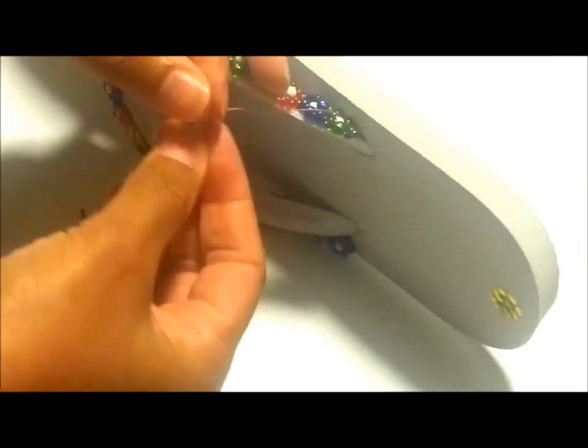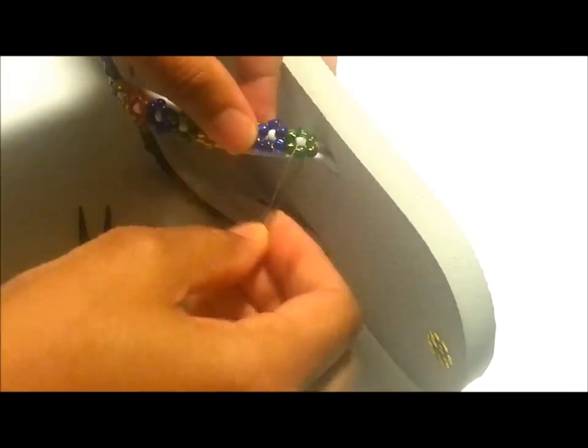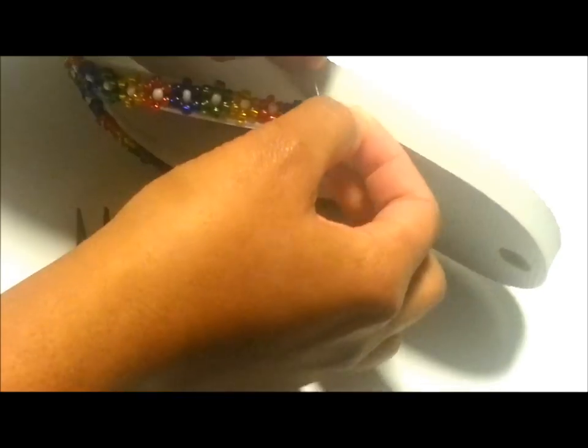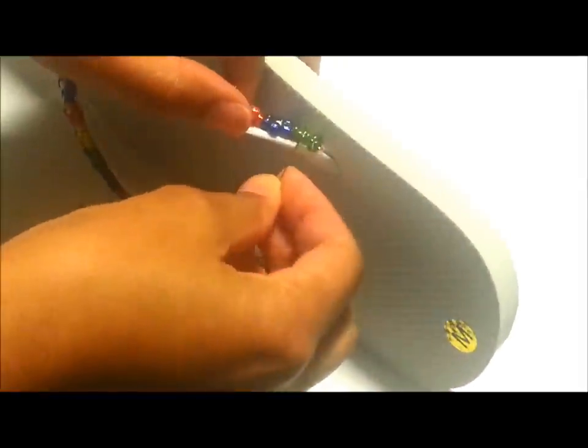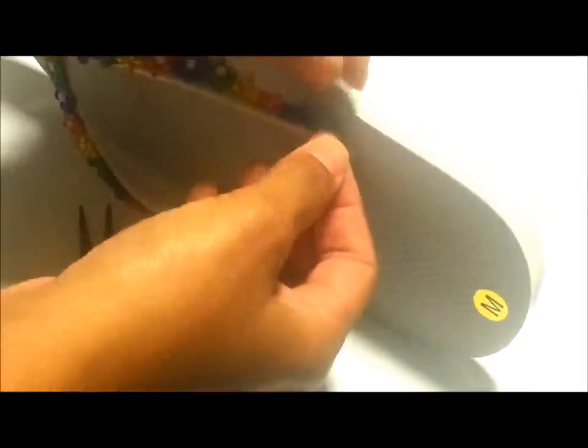And what you're going to do is run your needle through one of the strings, and then that creates a little loop and then you're going to run your needle through that loop. And it creates a knot, so it basically creates a really easy simple knot and you can do it a couple times to kind of double knot it.